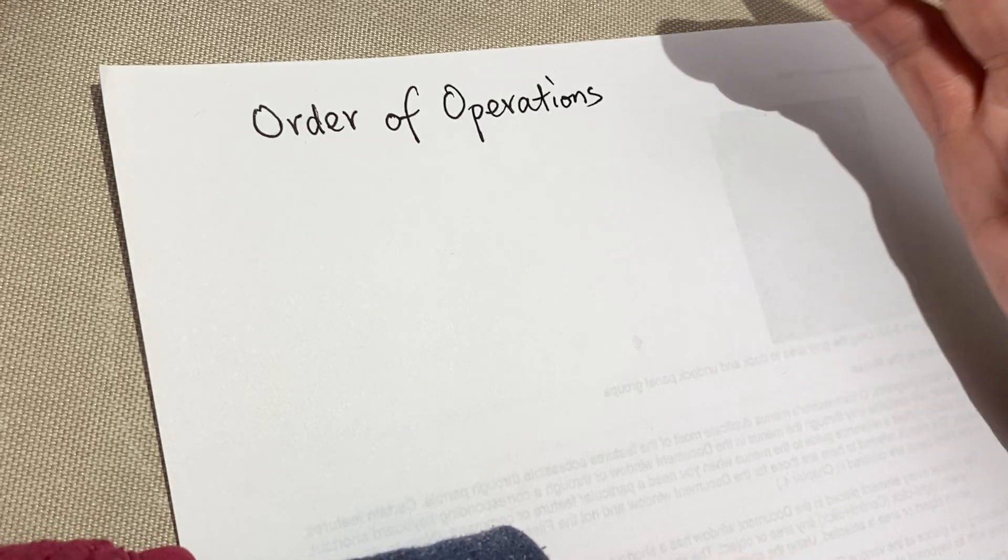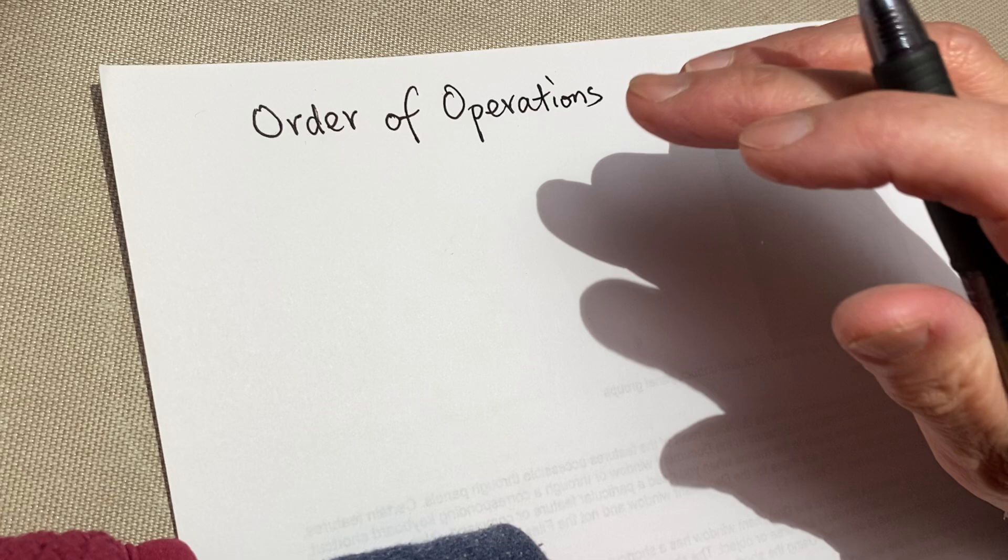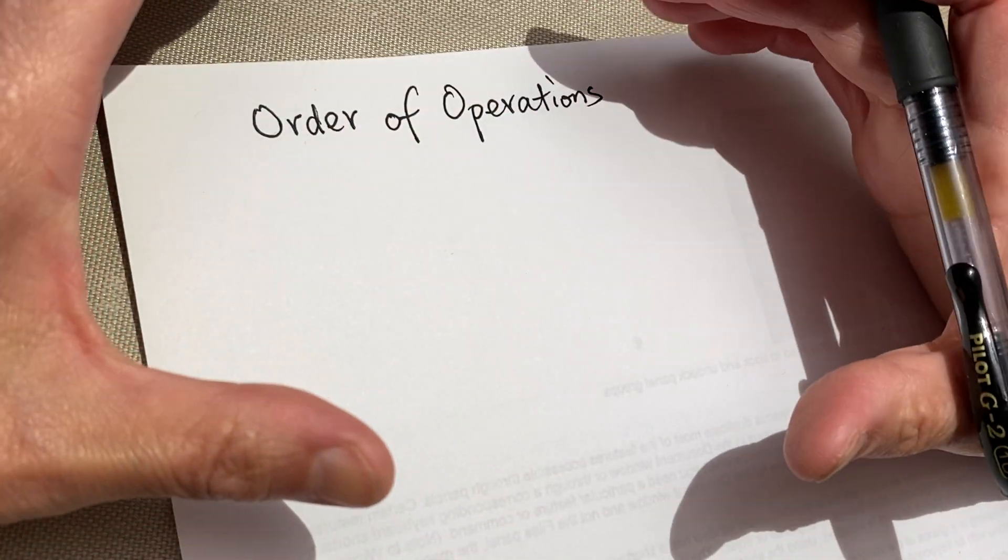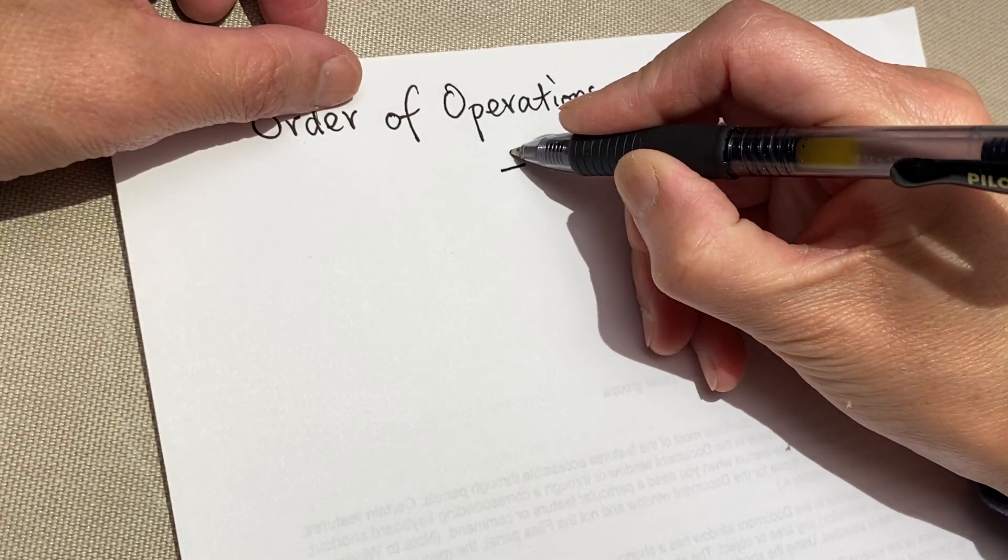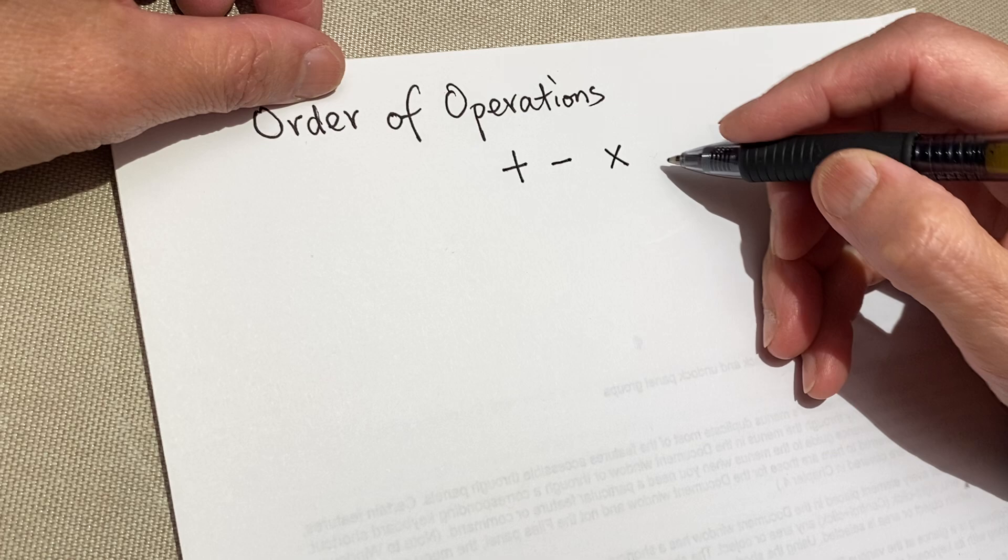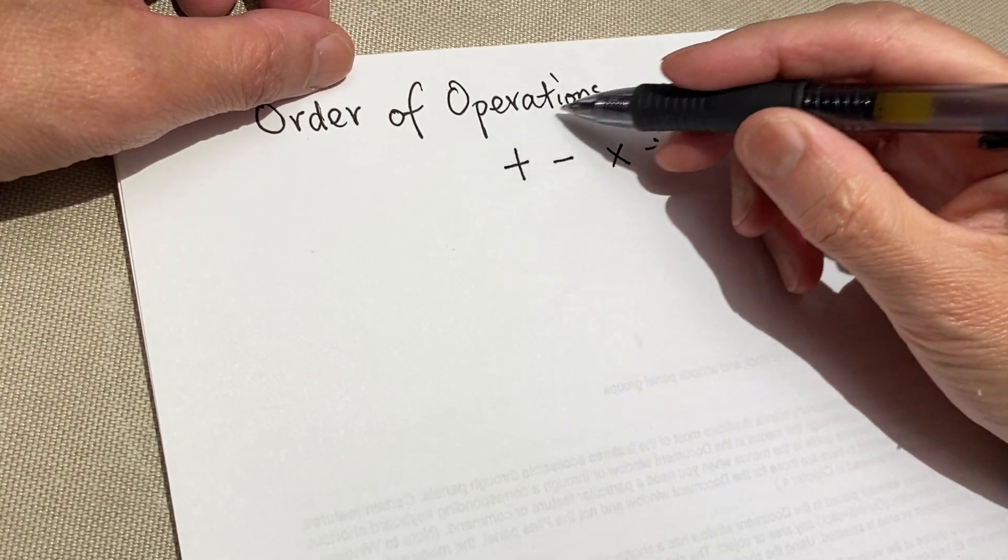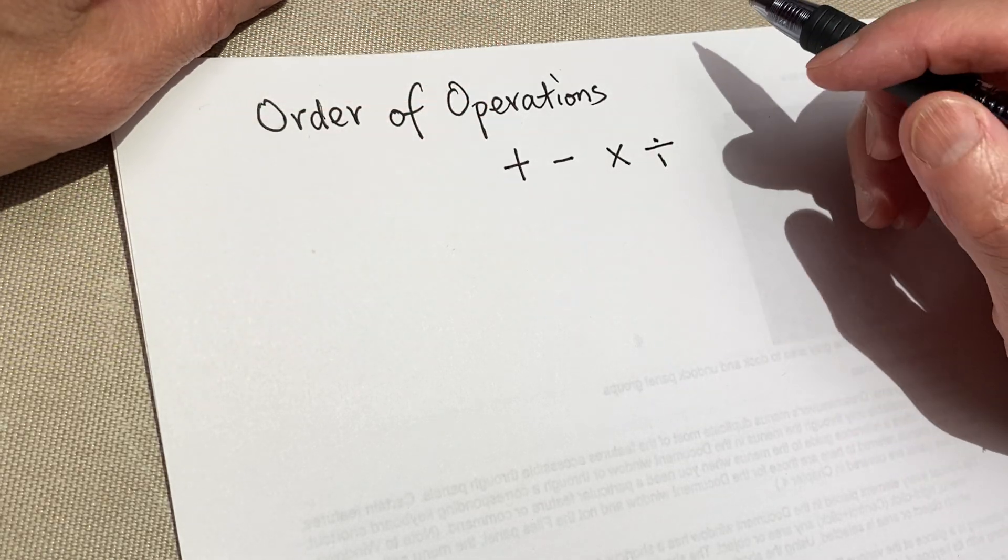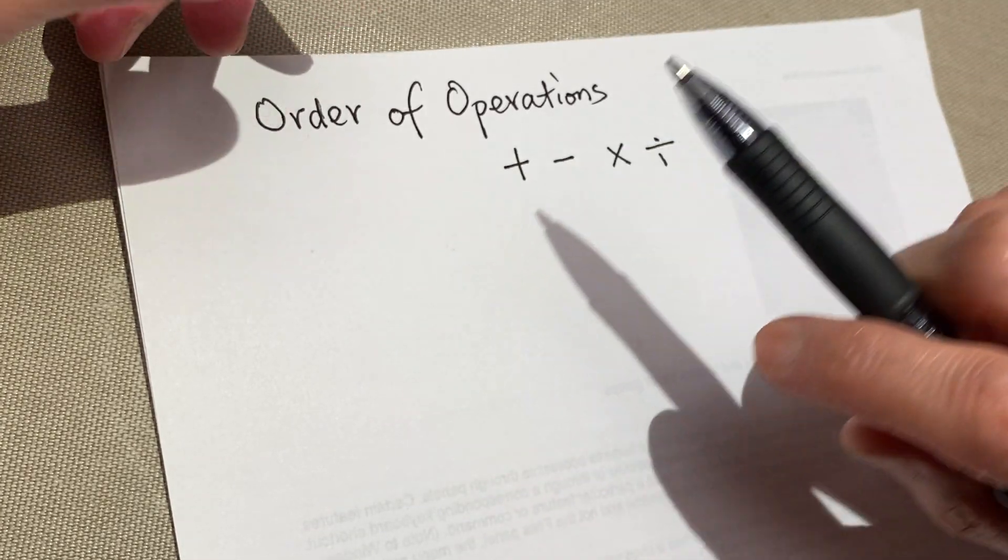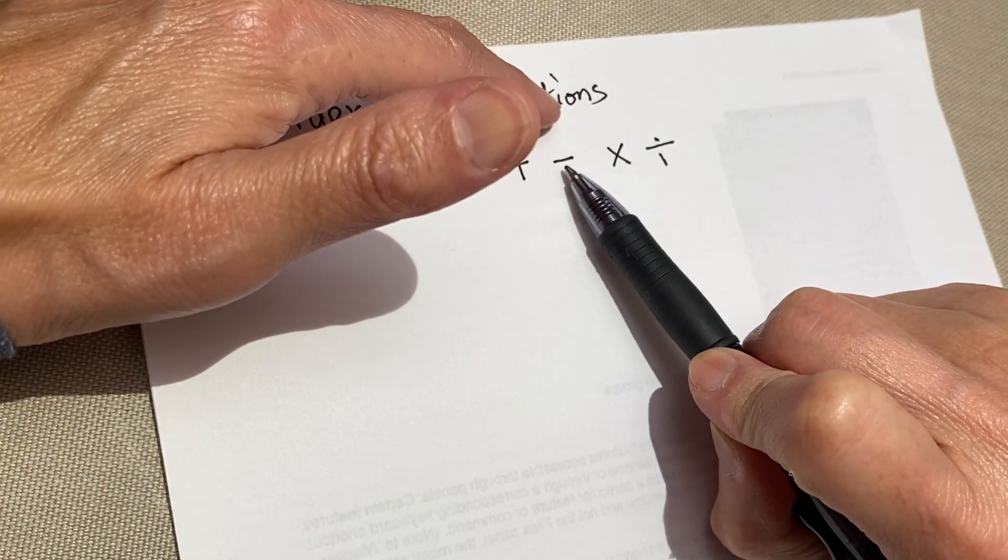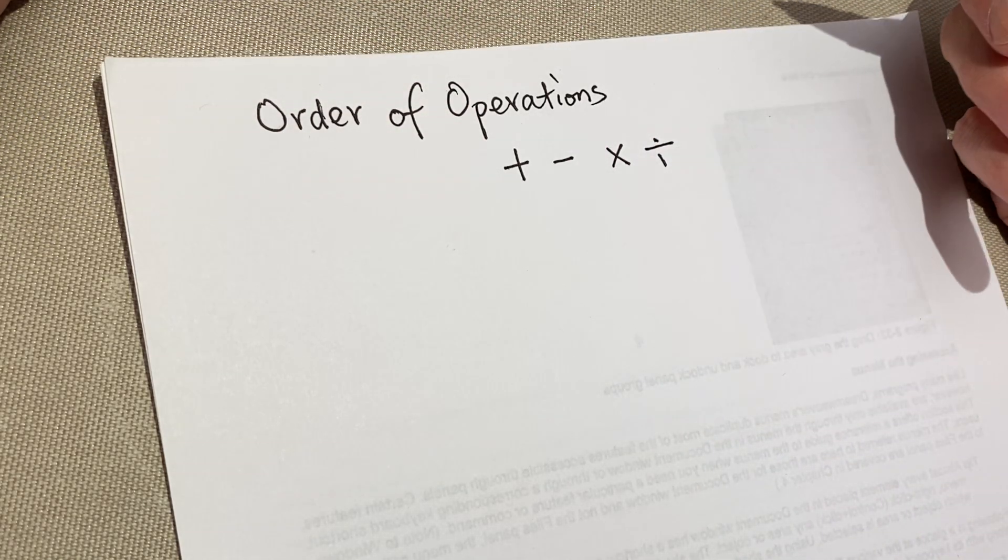What is order of operations? So the operations we have learned—we have not yet learned about exponents or parentheses—we're talking about only addition, subtraction, multiplication, and division. So within these four operations, when you have numbers with any or all of them together, you need to make an order which one goes first.